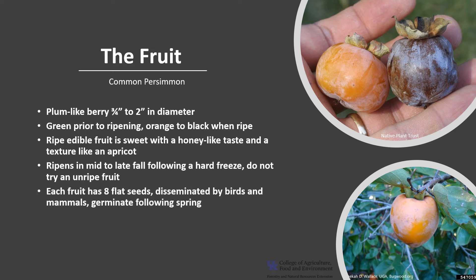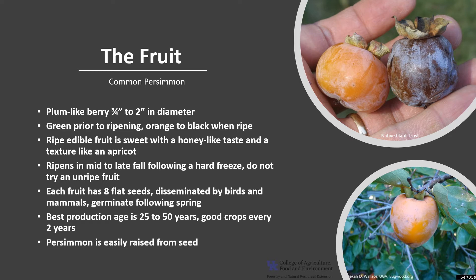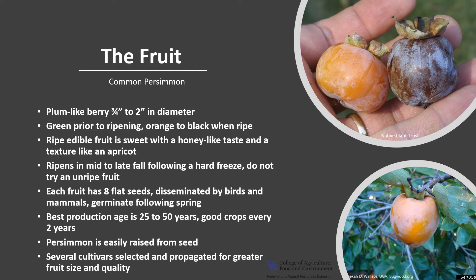Each fruit has eight flat seeds, and seeds are disseminated by birds and mammals that eat the fruit. They will remain dormant over winter with germination in April or May of the following spring. Optimal fruit production is between 25 and 50 years of age, with good seed crops about every two years. Persimmon is easily raised from seed — just follow recommended seed preparation — and there are several cultivars that have been selected and propagated for greater fruit size and quality.